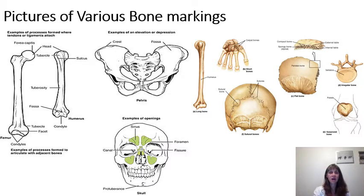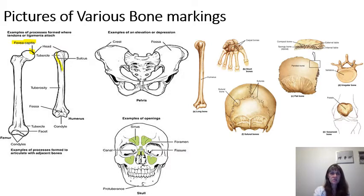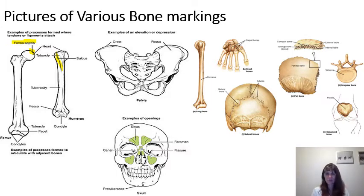Here we have pictures of different bone markings. One not previously mentioned is fovea — a small pit or depression. 'Capitus' means head, and there is a small pit in the head of the femur allowing nutrient arteries to penetrate. On the humerus there is a sulcus, which is a groove — the intertubercular sulcus, located between the greater tubercle and the lesser tubercle near the head of the humerus. It's really important to spend time in lab handling these structures and quizzing your classmates.